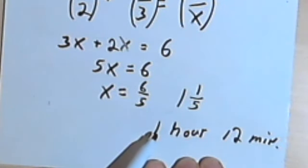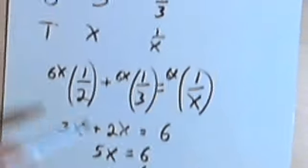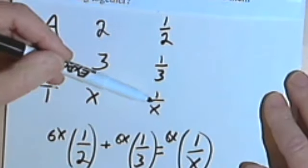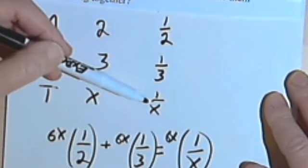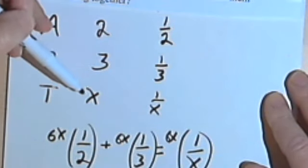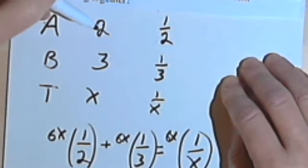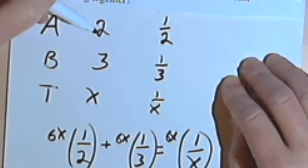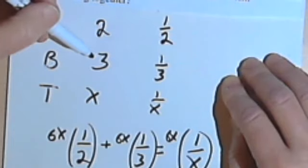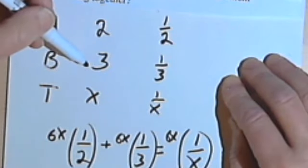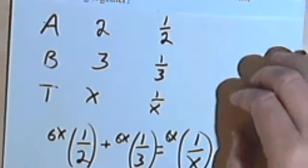And of course you can check this. You can put the six-fifths back into your calculations where you have one over x and see if this works. But you know, logically this should make sense, because we want a number which is going to be smaller than either the two or the three. And one hour and twelve minutes, or six-fifths of an hour, would do that. Let's look at another one.